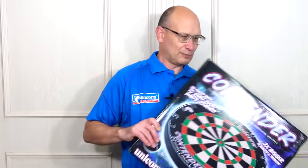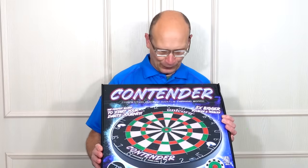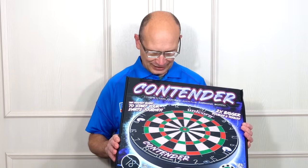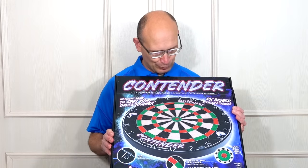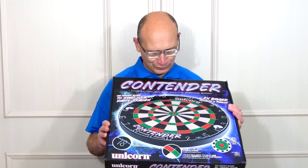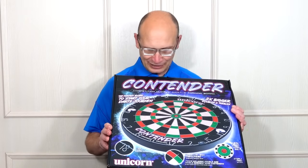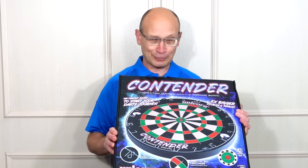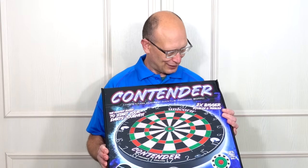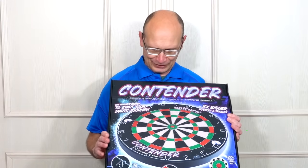But they also sent this, which is a new dartboard called the Contender. It's got bigger doubles and trebles and also the bullseye twice the size of a normal doubles, and I'm not quite sure yet what I think about this whether it's a good or a bad idea.